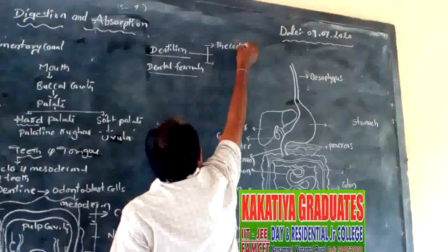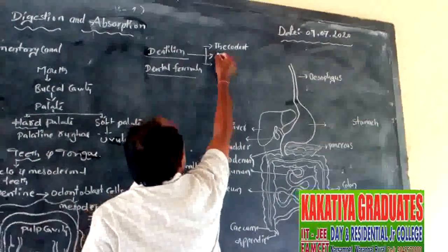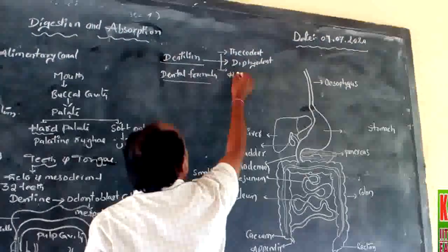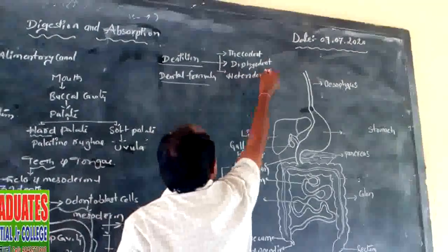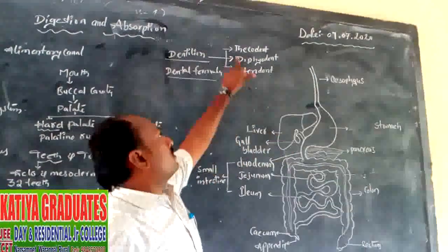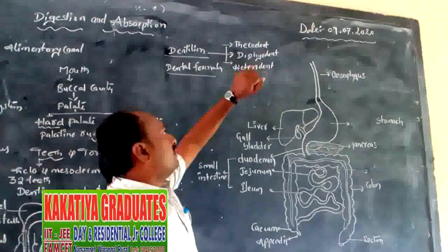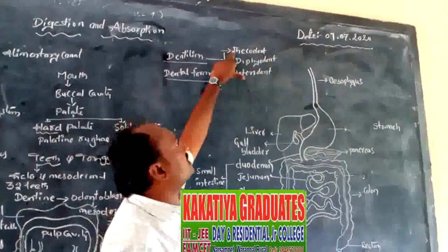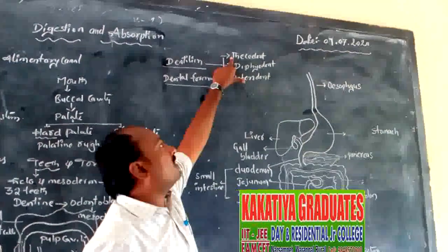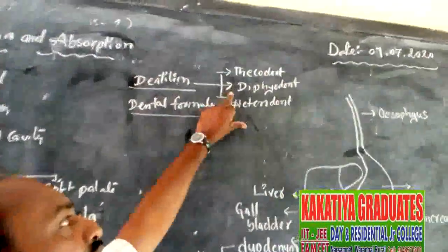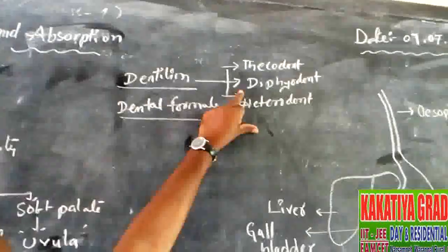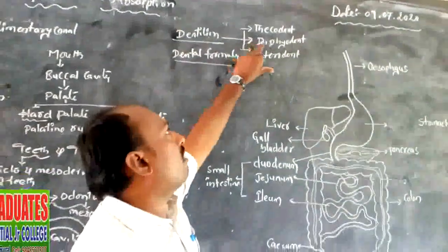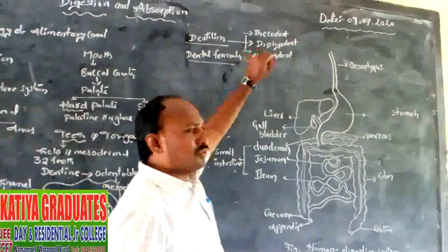The three types are: thecodont type, diphyodont type, and heterodont type. In thecodont type, human teeth are fixed at the socket of the jawbone. In diphyodont type, two sets of teeth appear in a human being's lifetime — hence called diphyodont (diphi means two).